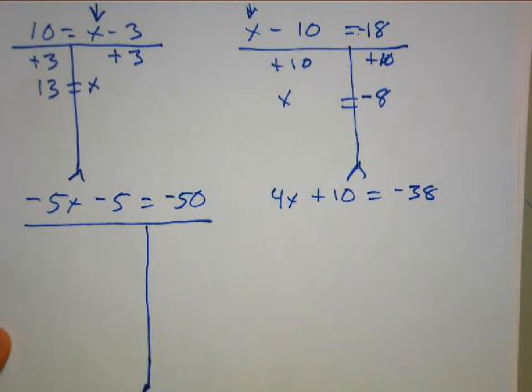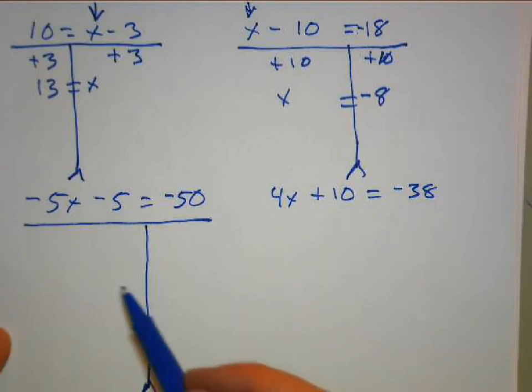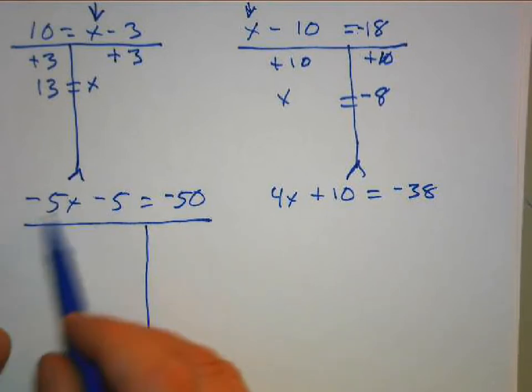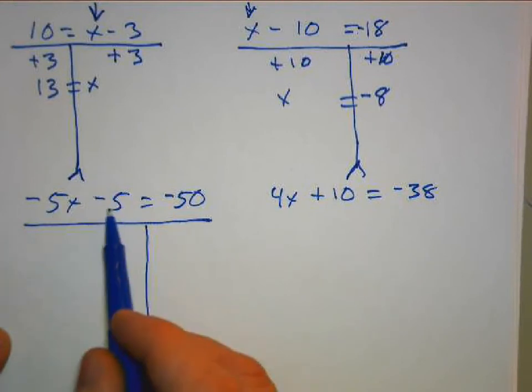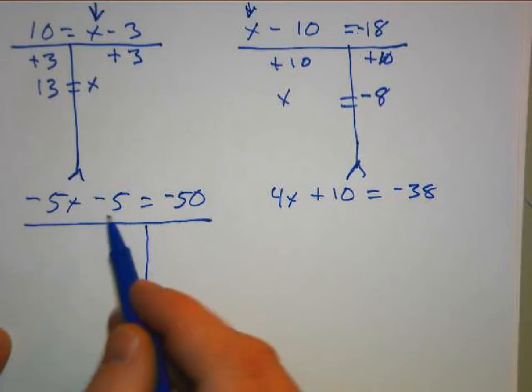We're going to first try to isolate X, but we have to do it in stages. Our first stage is to get rid of the numbers, to get rid of the friends. So we want to get rid of the friends. If it's minus 5, we're going to add 5. And if we add 5 here, we have to add 5 here to maintain balance.